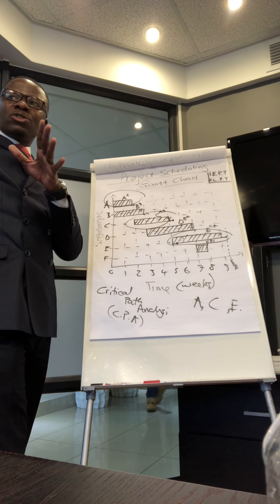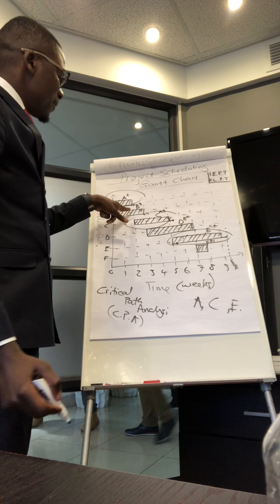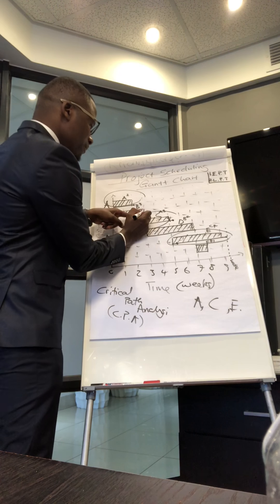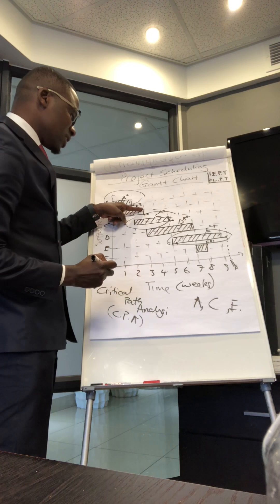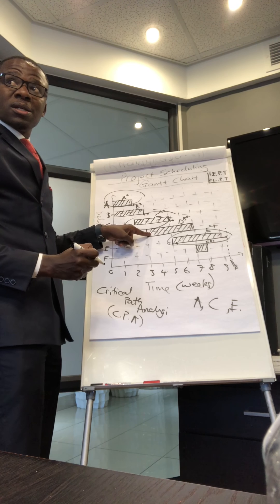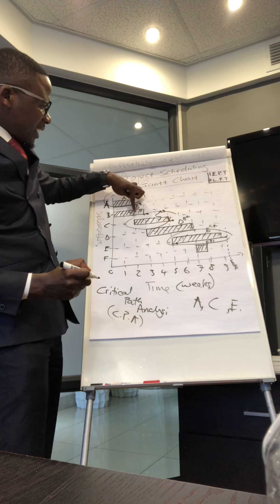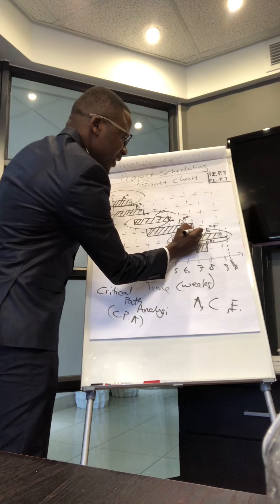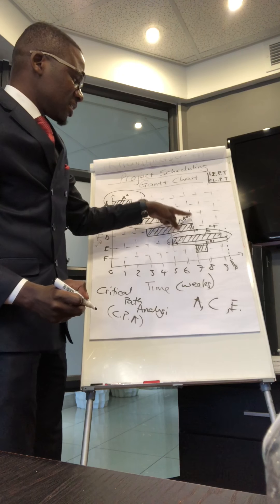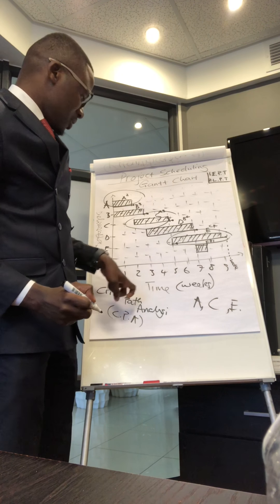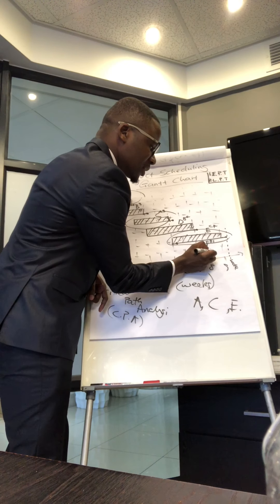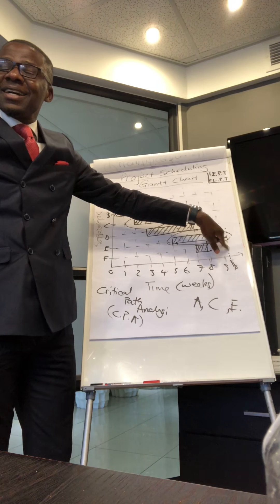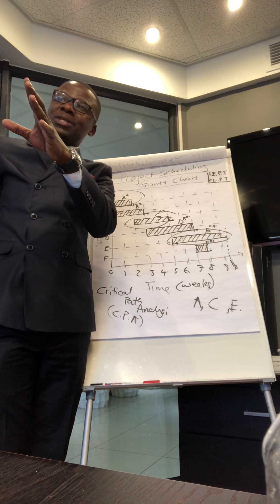How come B is not critical? Let's do a study: if you move B by a single day, it will move D by a day, which will move F by one day — but F still finishes inside week nine. So delaying B does not push the project beyond its deadline, which means B, D, and F are not critical.